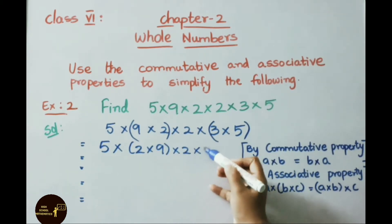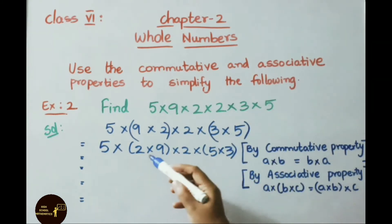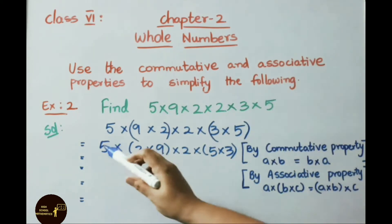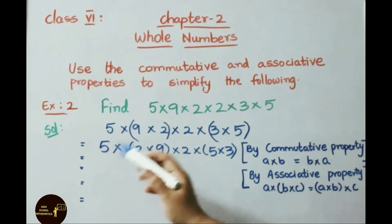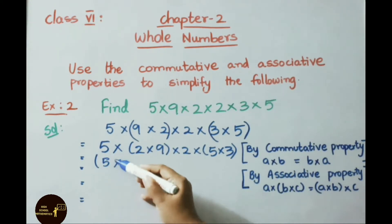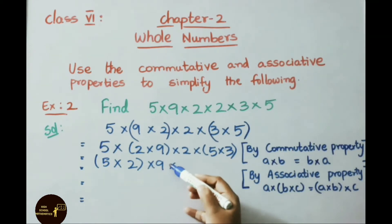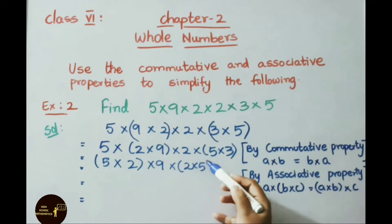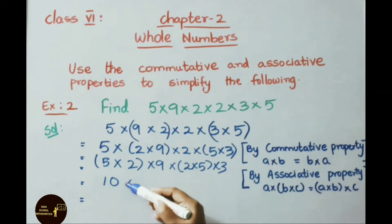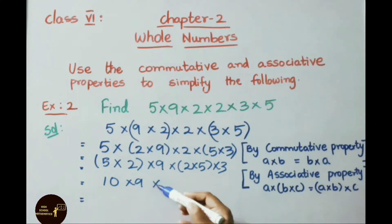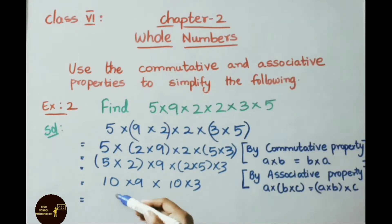Into 2 into 5 into 3. Now this looks like the associative property: A into B into C can be written as (A into B) into C. Let us change the brackets and apply associative property: (5 into 2) into (9 into 2) into (5 into 3). 5 twos are 10, into 9, into 2, 5s are 10, into 3.